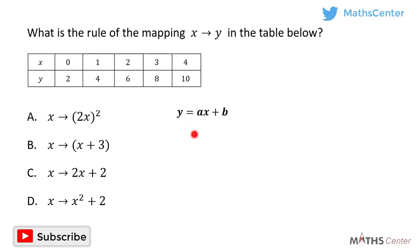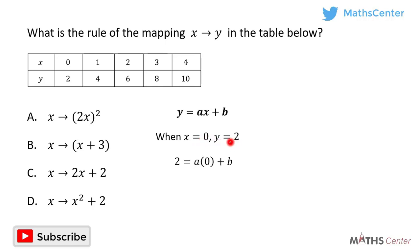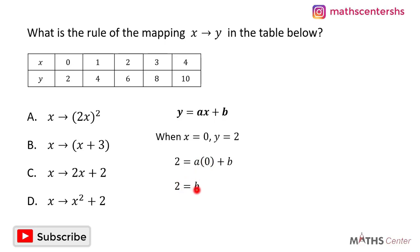I'm going to begin with x equal to 0 and y equal to 2. Substituting into y is equal to ax plus b: when x is 0 and y is 2, we get 2 is equal to a times 0 plus b. A times 0 gives us 0, so 2 is equal to b. We have found the value of b, which is 2.